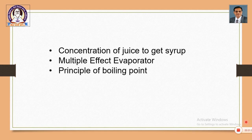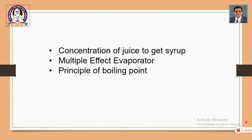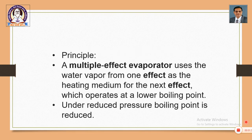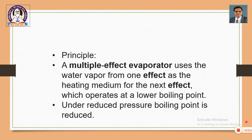An evaporator is a single unit. When evaporators are 3 in series, it is called a triple effect evaporator. When it is a set of 4, it is called a quadruple effect evaporator. This works on the principle of boiling point. Three things are important: this is the stage where juice is converted into syrup, the process is carried out in a unit called a multiple effect evaporator, and it works on the principle of boiling point. The principle is that a multiple effect evaporator uses the water vapor from one effect as the heating medium for the next effect, which operates at a lower boiling point. In other words, under reduced pressure the boiling point is reduced.